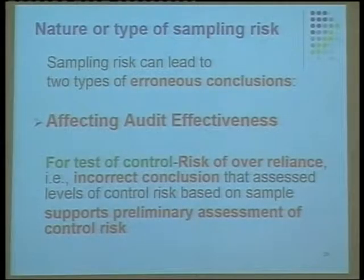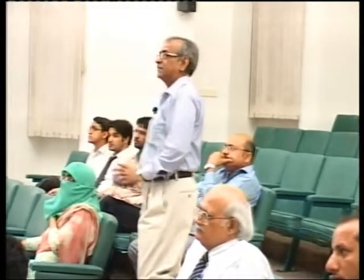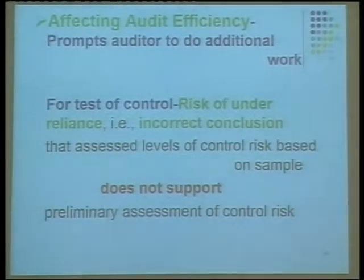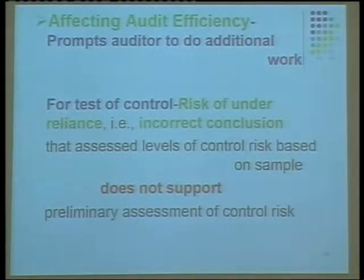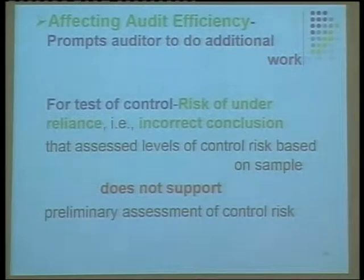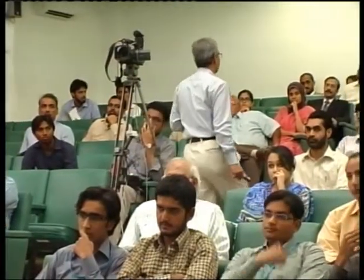Now coming to the audit efficiency slide — errors affecting audit efficiency. Here the red light is on if an error prompts us to do additional work. For example, when we take out a sample and the sample indicates a problem, this is called incorrect under-reliance in the case of internal controls, and incorrect rejection in the case of substantive procedures. In both cases, we perform additional procedures to get reasonable assurance that the financial data are not materially misstated or that our assessment of control is confirmed.